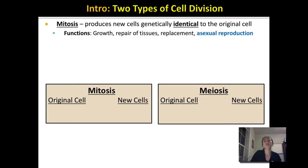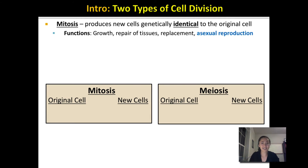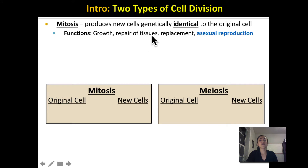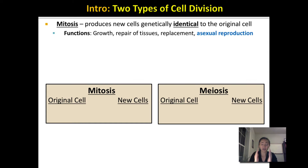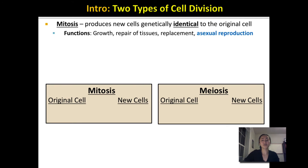Now let's talk about the two different types of cell division and their purpose. Mitosis is one type of cell division that produces new cells genetically identical to the original cell — the same DNA sequences and the same number of chromosomes. This is needed during growth, tissue repair, and constant cell replacement throughout your body, like skin and intestinal cells. Mitosis is also used for asexual reproduction in single-celled organisms like an amoeba.